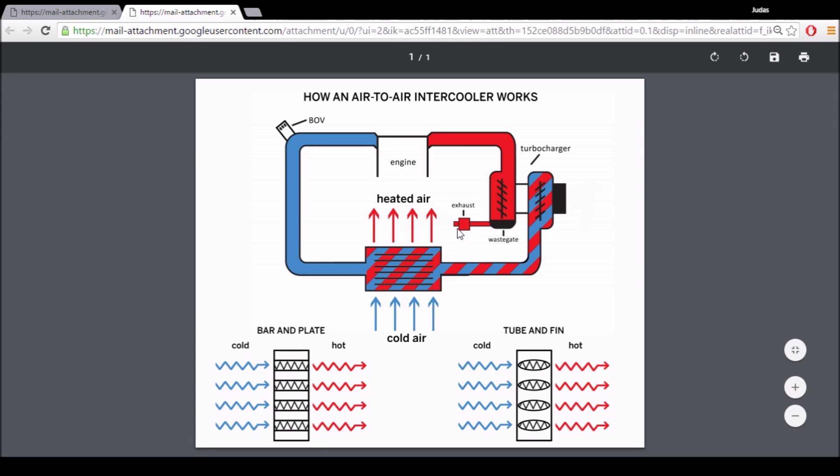So what happens in a turbocharger system, just as a review, is the engine pumps out exhaust gases that are really hot. It's forced down into the turbocharger through the piping, spins the turbine, and the exhaust gases are pushed out the exhaust via the wastegate.